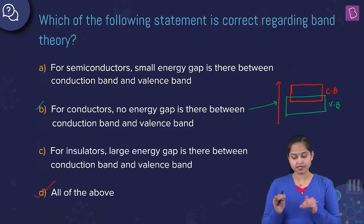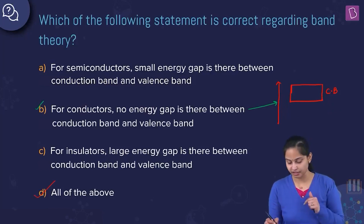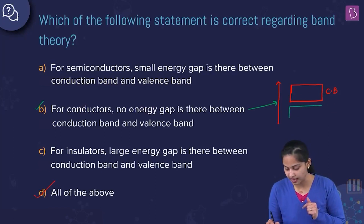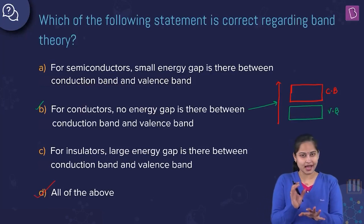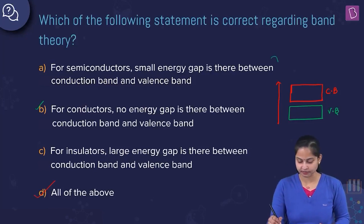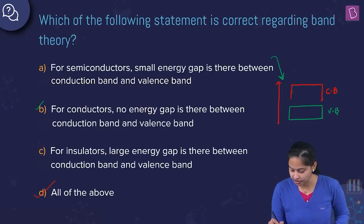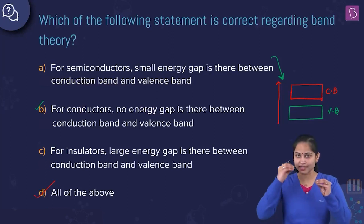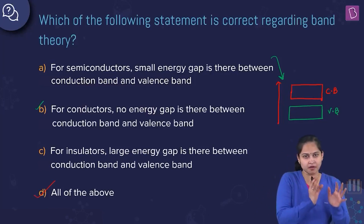Option B is correct. Talking about semiconductors: there is a small energy gap between the valence band and conduction band. An electron can transfer to the conduction band from the valence band, but not as easily as in the case of conductors. This small energy gap allows some electron movement.